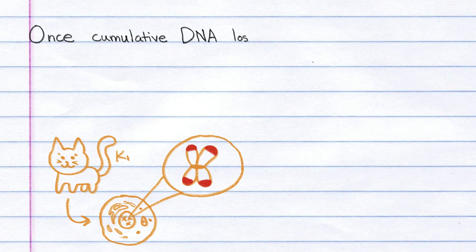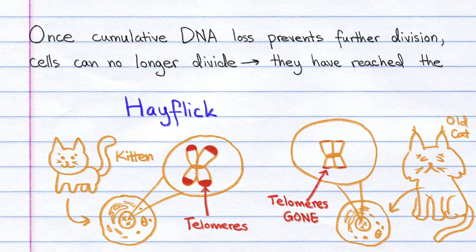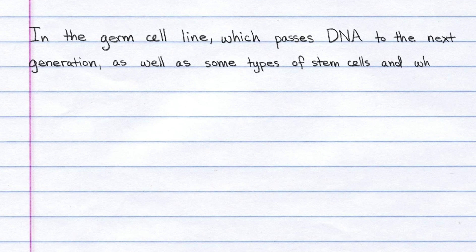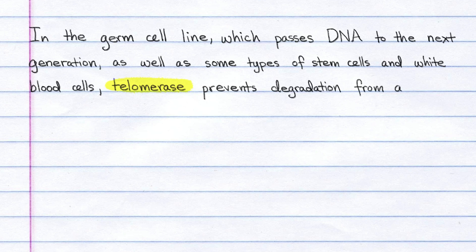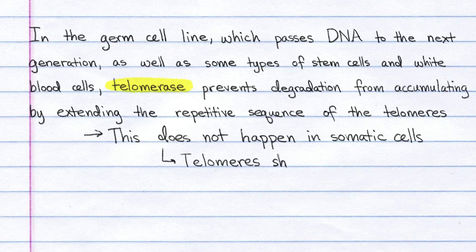Once the cumulative DNA loss prevents further division, cells can no longer divide — they have reached what is known as the Hayflick limit. In the germ cell line, which passes DNA to the next generation, as well as in some types of stem cells and white blood cells, telomerase prevents degradation from accumulating by extending the repetitive sequence of the telomeres. This does not happen in somatic cells, and so their telomeres shorten with each round of replication.